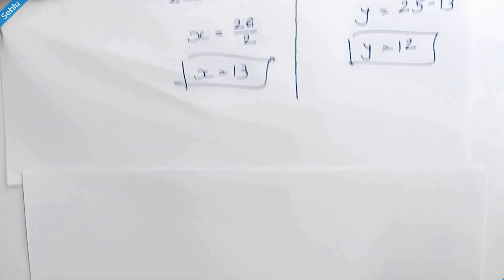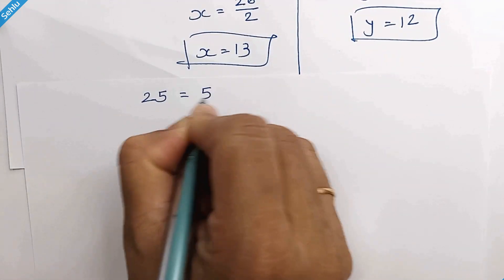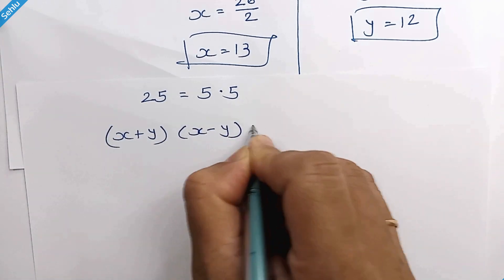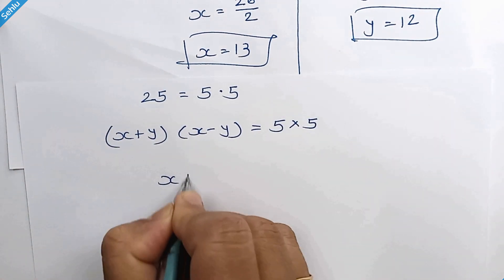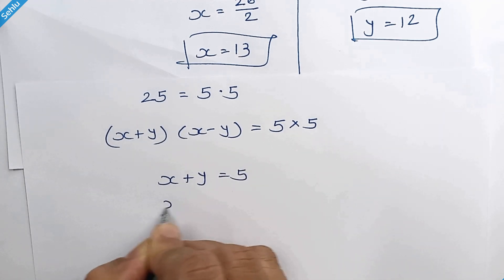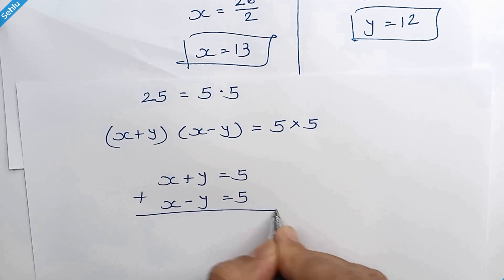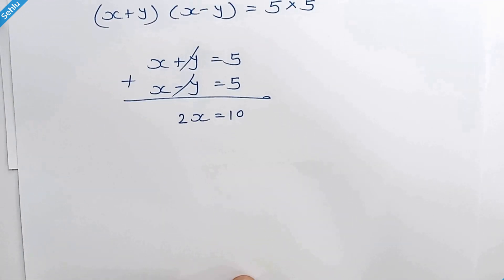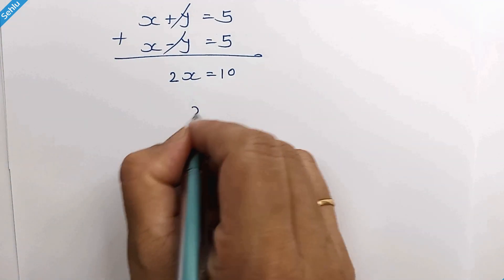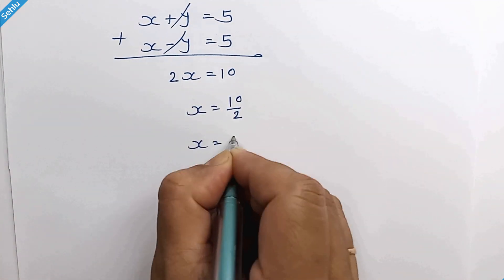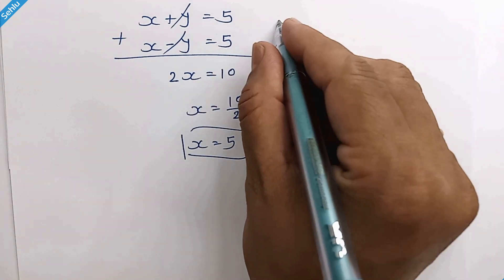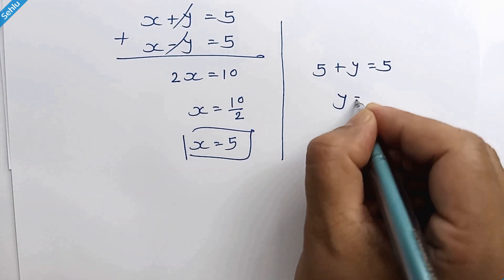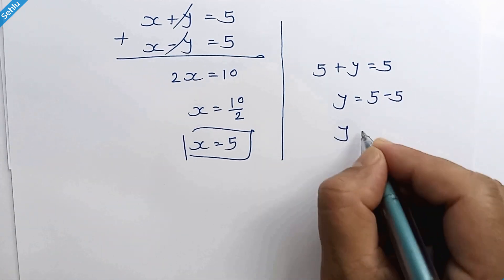Now let's take case 2, which is 25 equal to 5 times 5. So x plus y times x minus y is equal to 5 times 5. We can compare: x plus y is equal to 5 and x minus y is equal to 5. Adding them, we have 2x is equal to 10, so x is equal to 5. Putting this value into the equation: 5 plus y is equal to 5, so y is equal to 5 minus 5, which gives y is equal to 0.